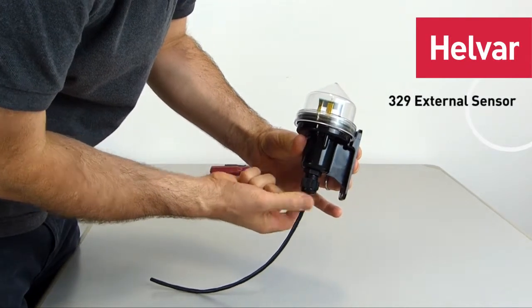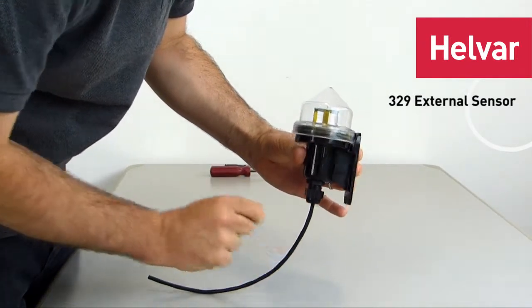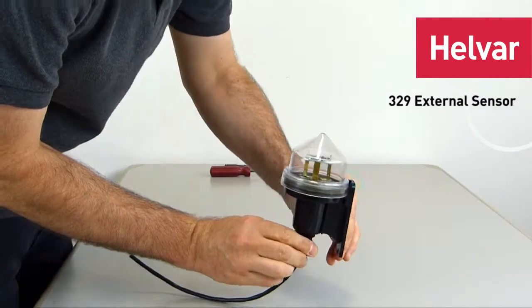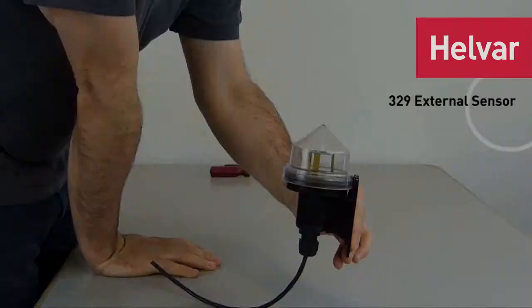You can tighten up the cable gland to secure the DALI cable. But that is the 329 DALI external light unit assembled.